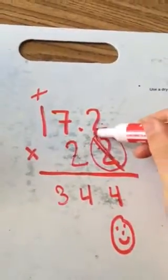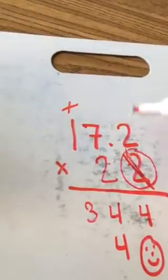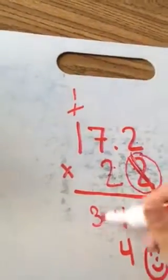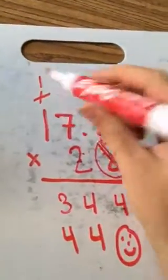So 2 times 2 is 4. Let's put my 4 down there. 2 times 7 is 14. And then 2 times 1, 2, plus 1, 3.